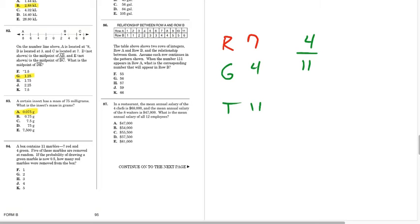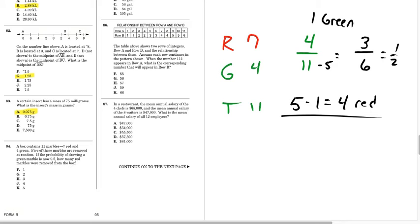We took away 5 marbles. We're going to end up with something over 6. So we have to end up, this is going to equal 1 half, right? It has to be 3. So we took out 1 green, which means we had to take out how many red? 4. 5 minus 1 is 4 red. That is J.